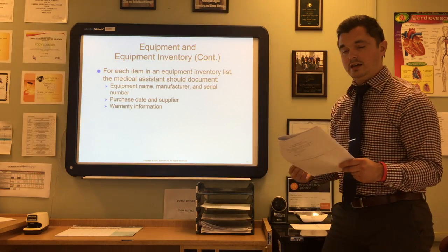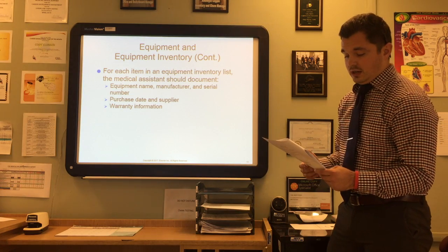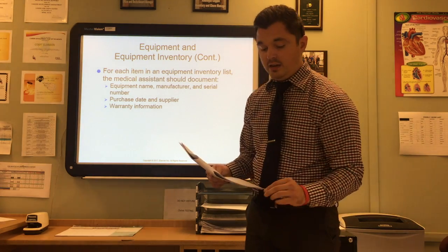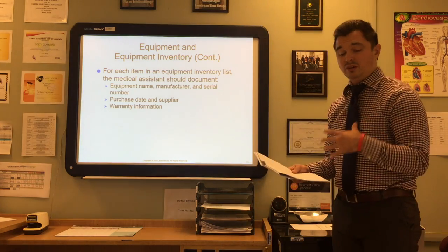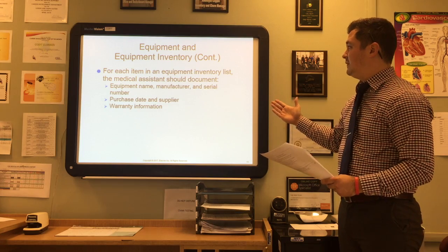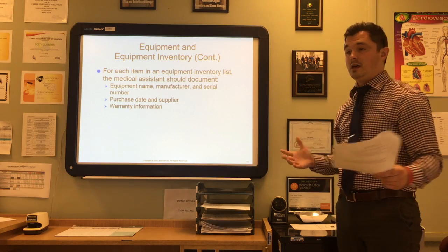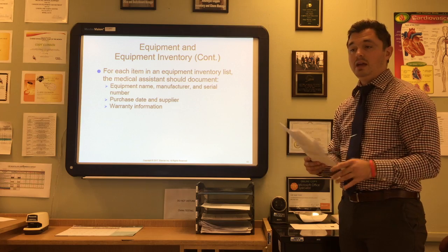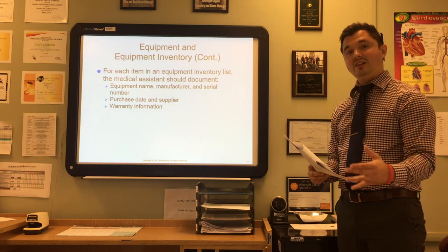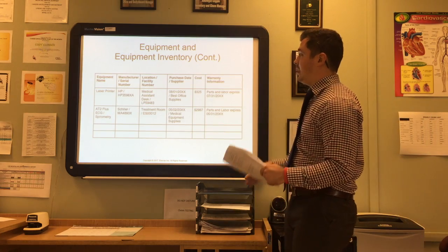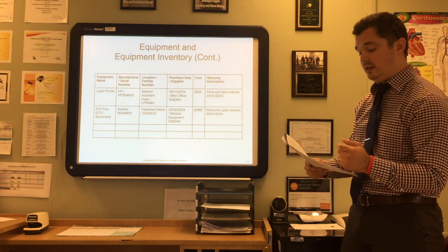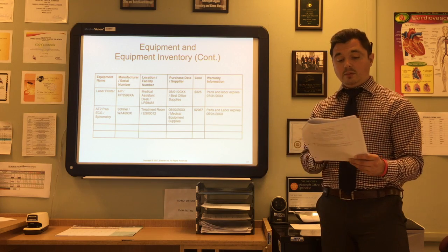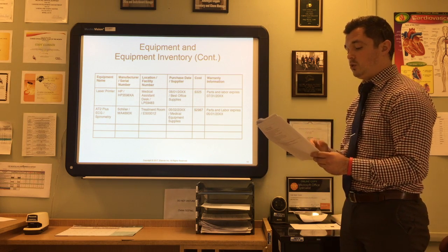Procedure 11-1 on page 180 of your textbook explains how to perform an equipment inventory. For each item in the equipment inventory list, the medical assistant should document the equipment name, manufacturer, serial number, purchase date, who it was purchased from, and any warranty information — so you have everything in one place and easy to find. An equipment inventory list can be created in a spreadsheet such as Excel.